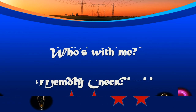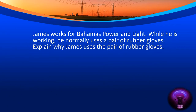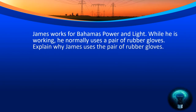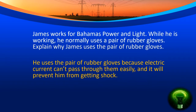Memory check. James works for Bahamas Power and Light. While he is working, he normally uses a pair of rubber gloves. Explain why James uses the pair of rubber gloves. He uses the pair of rubber gloves because rubber is an insulator and it will prevent him from getting an electric shock. Very good.